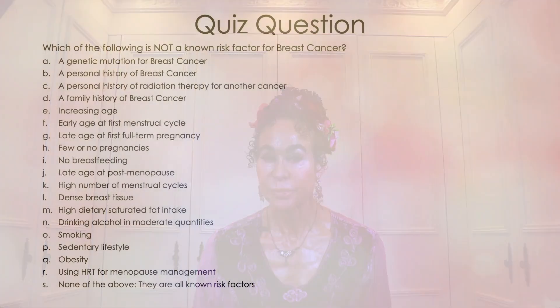Apart from having a genetic mutation for breast cancer, what are the other things that can put you at increased risk for breast cancer? How many factors can you cite? How would you answer this quiz question?